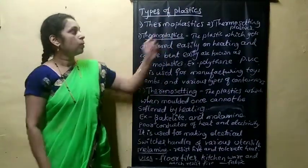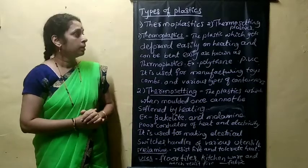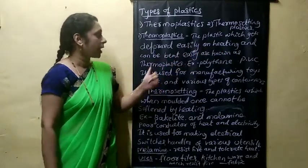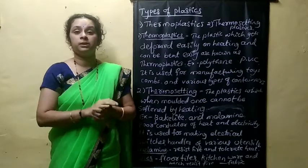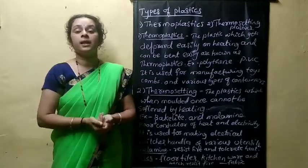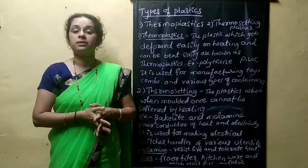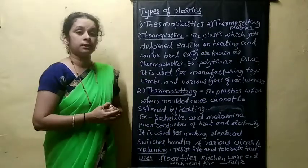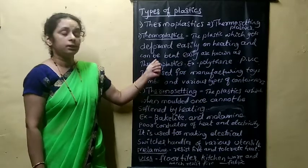What is thermoplastic? The plastics which get deformed easily on heating and can be bent easily are known as thermoplastics. When you apply heat, they change their shape easily. Some plastic materials you can bend easily, but some plastic materials cannot be bent — when you bend them, they will break. That is a different type of plastic.